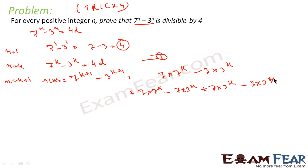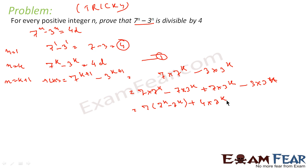In this form we can write things using 4d. What we get is: 7 times (7^k minus 3^k) plus (7 times 3^k minus 3^(k+1)), which becomes 7 times 4d — because we assumed 7^k minus 3^k equals 4d — plus 4 times 3^k.